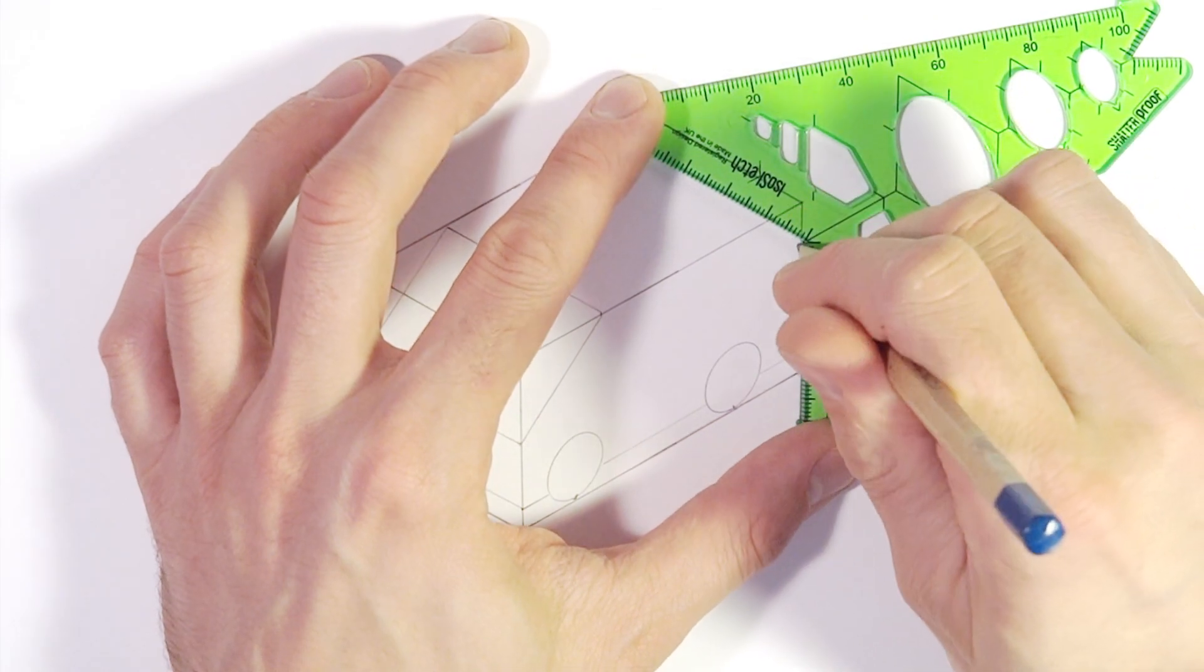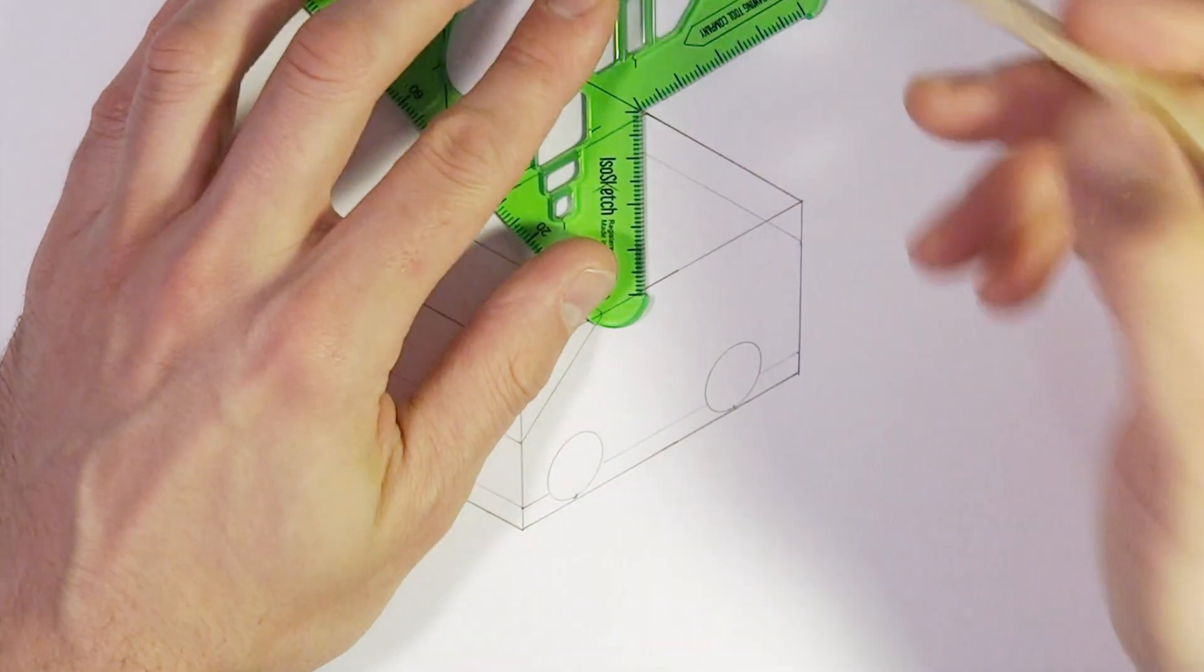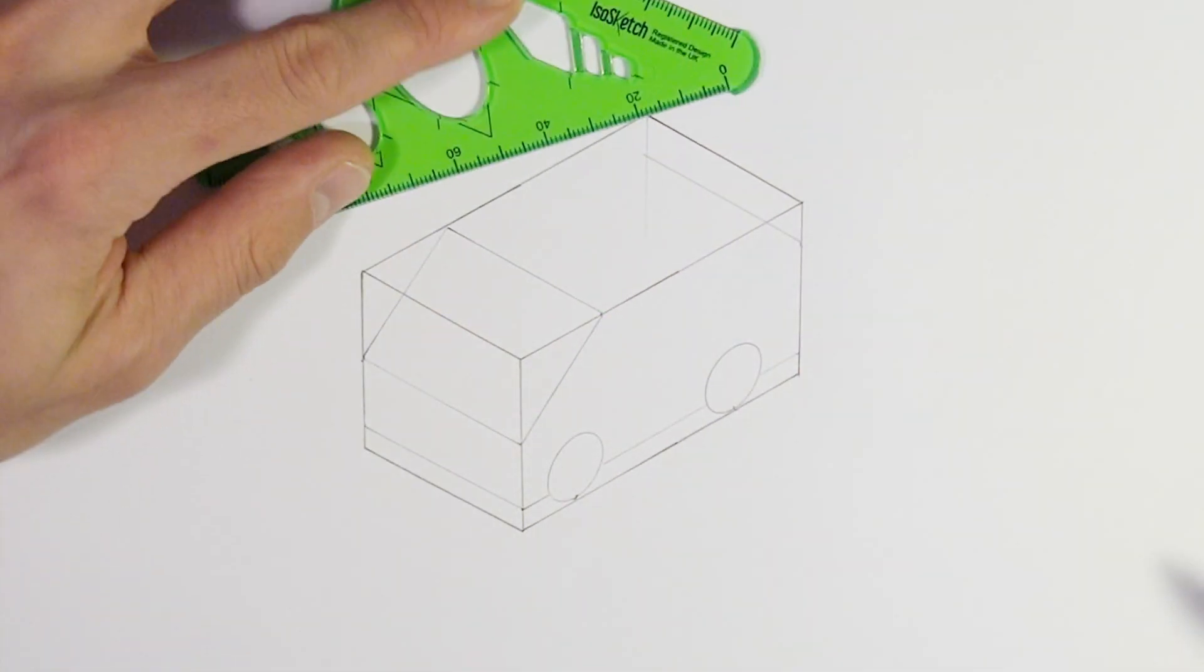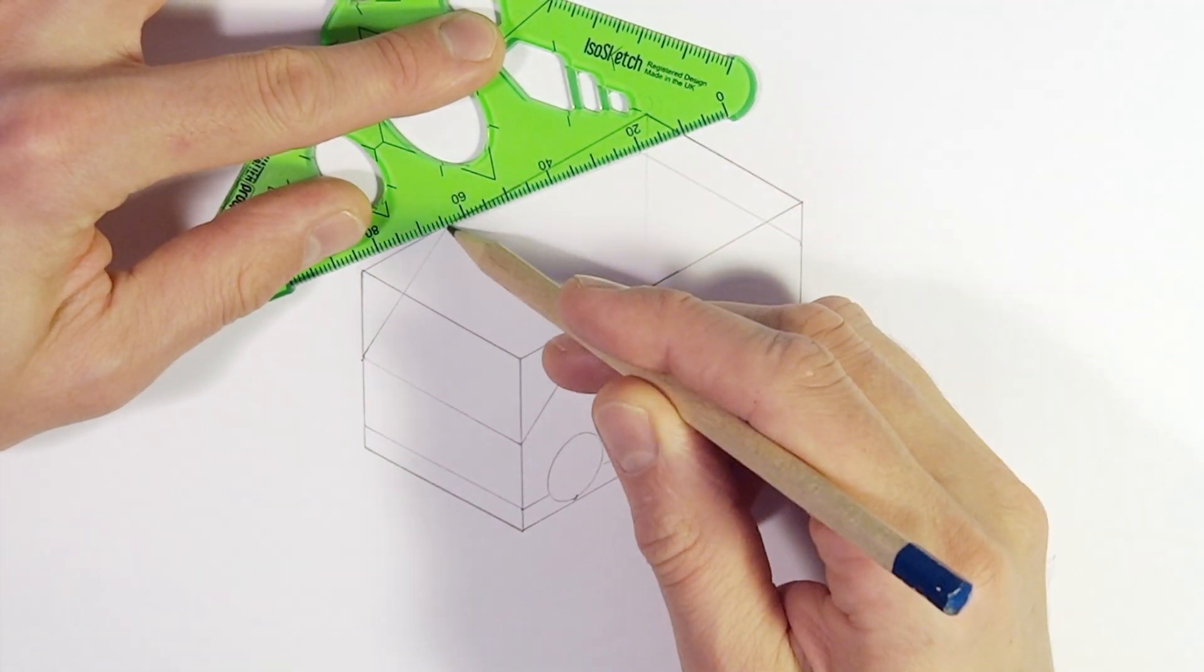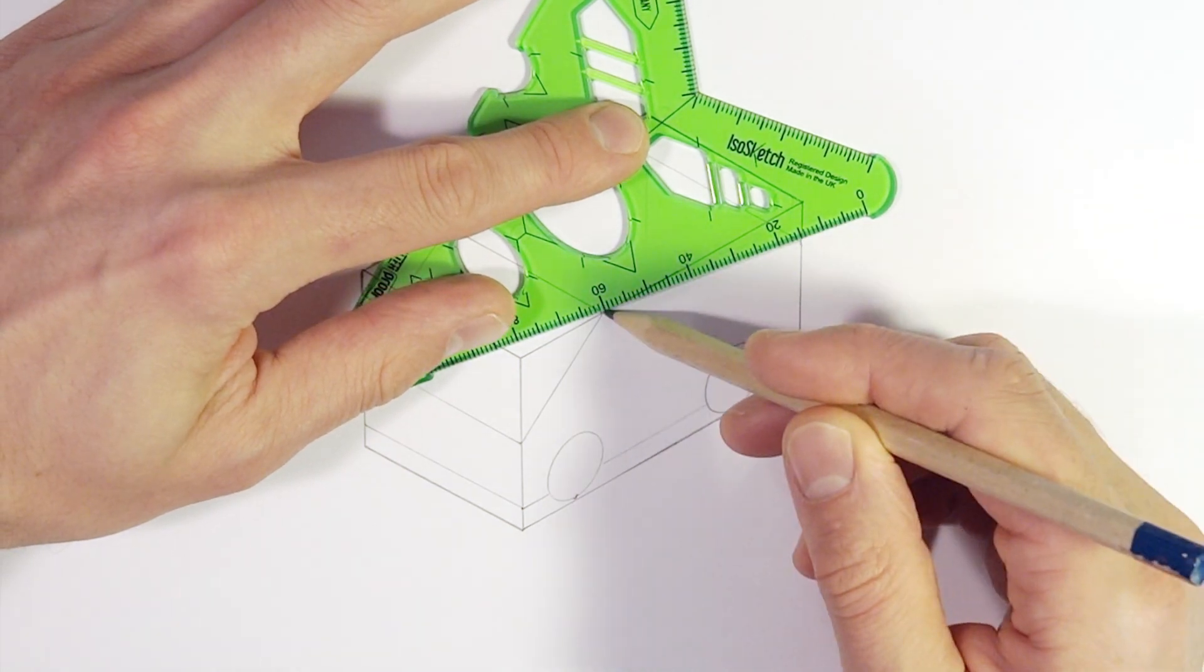We're going to do the same treatment at the back now, just mark on a line across the back where the back of the car is going to be, the back of the body, the swooping body that I'm going to create. Honestly, you guys can do this any way you want and you can choose to put any sorts of shapes, styles, lines, curves.